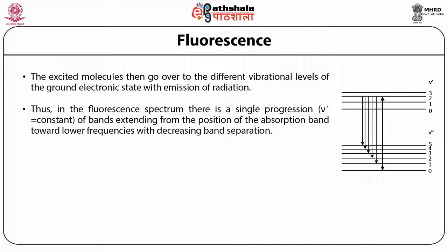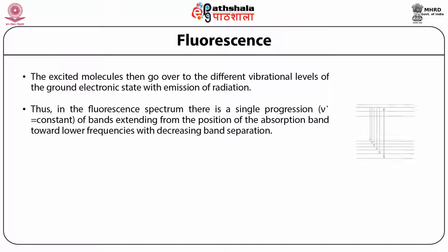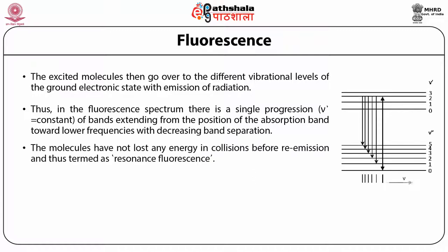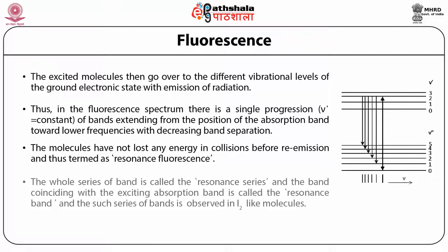The absorbing molecules are excited to the vibrational level of the upper electronic state of this particular absorption band only. The excited molecules then go over to different vibrational levels of the ground electronic state with emission of radiation. Thus, in the fluorescence spectrum, there is a single progression corresponding to nu' = constant of bands extending from the position of the absorption band towards lower frequencies with decreasing band separation. The molecules have not lost any energy in collisions before re-emission, and this is thus termed as resonance fluorescence.